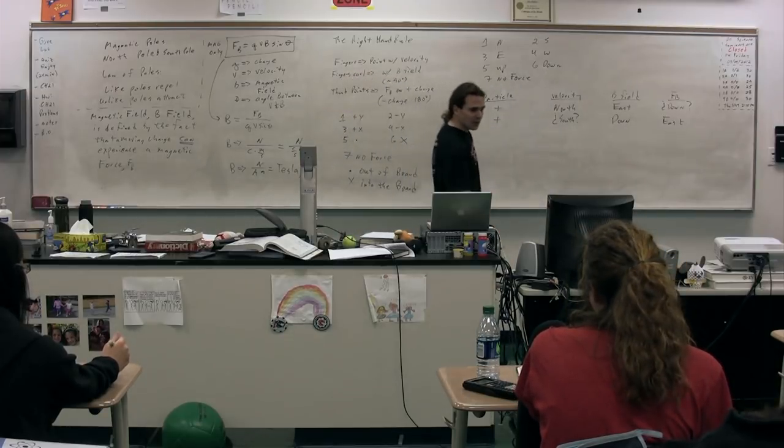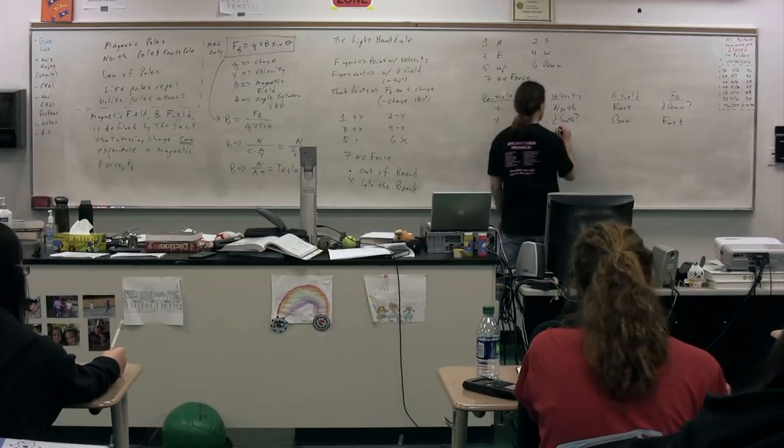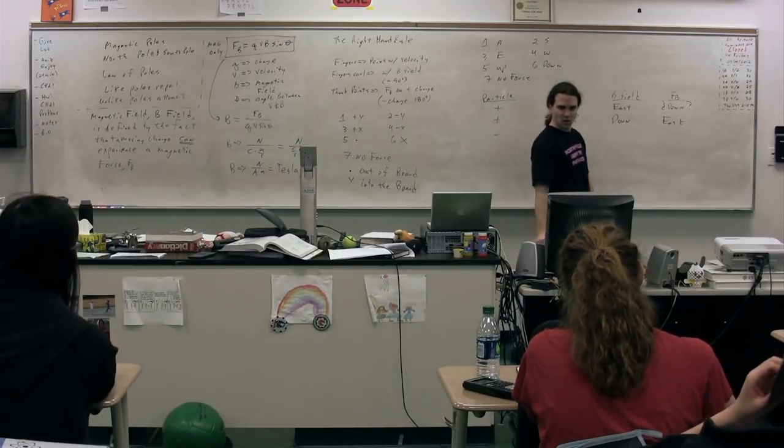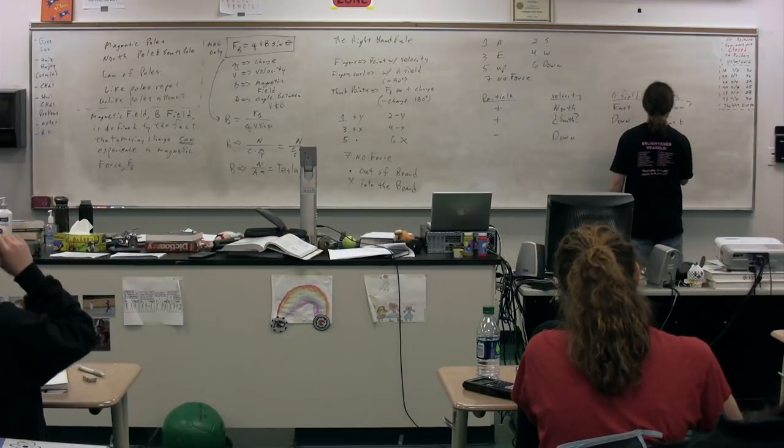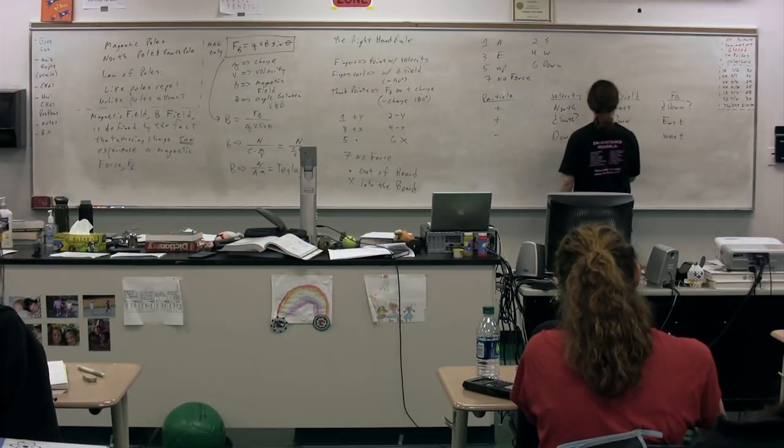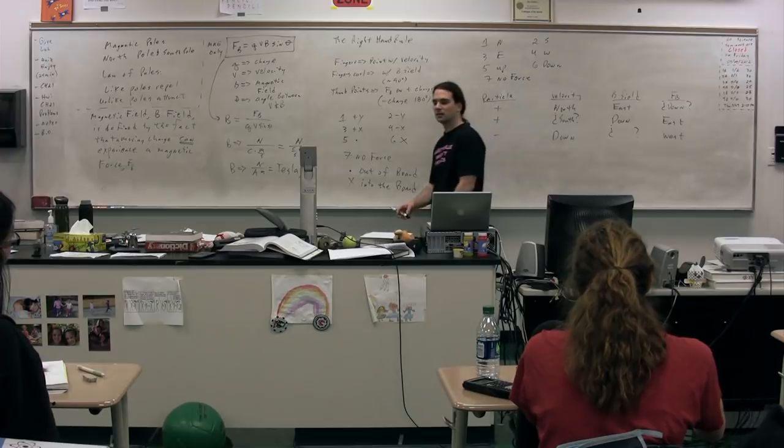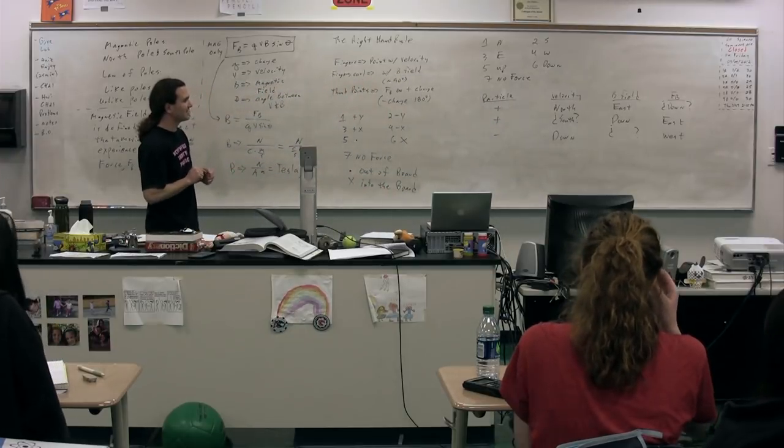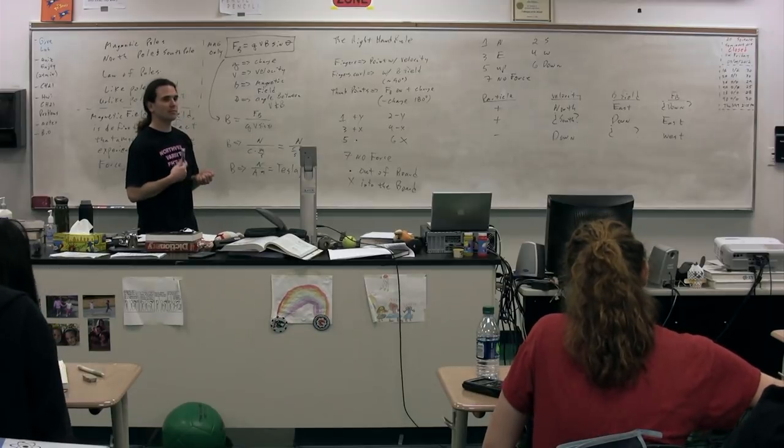Last one. We have a negative particle which is moving downward in a line. We know the magnetic force is west. What is the direction of the magnetic field? Negative charge moving down. Magnetic force is west. What's the direction of the magnetic field?